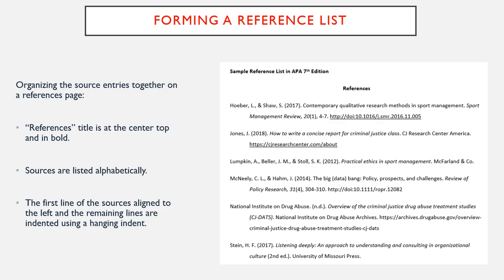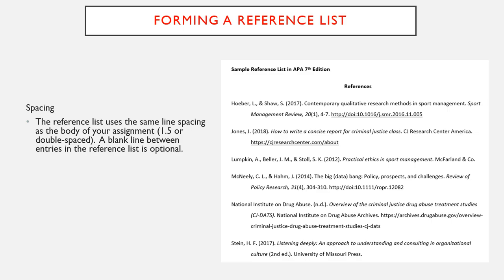Forming a reference list: following the APA citation guide for creating a references page will help you communicate with your audience details about your sources such as the author, date, and URL. The references title is centered at the top in bold. Sources are listed alphabetically. The first line of each source entry is flush to the left and the remaining lines are indented using a hanging indent. The reference list uses the same line spacing as the body of your assignment — for instance, if you used 1.5 or double spacing, then the references should be spaced in the same way.